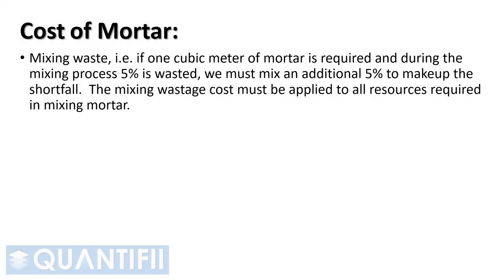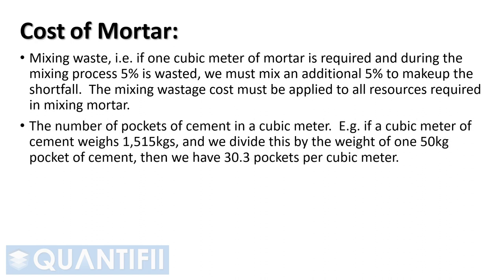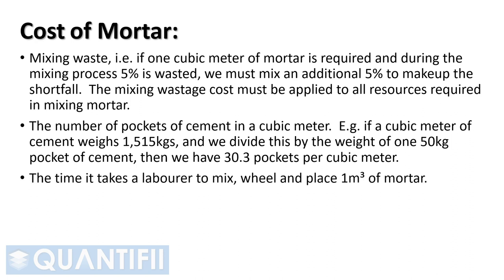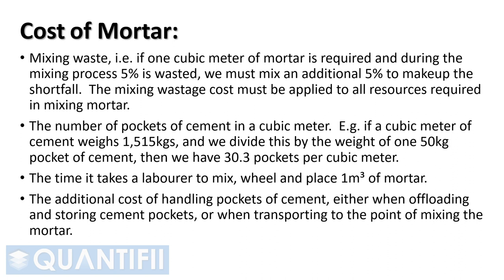Mixing waste — that is, if one cubic meter of mortar is required and during the mixing process 5% is wasted, we must mix an additional 5% to make up the shortfall. The mixing wastage cost must be applied to all resources required in mixing mortar. The number of pockets of cement in a cubic meter — for example, if a cubic meter of cement weighs 1,515 kilograms, and we divide this by the weight of one 50 kilogram pocket of cement, then we have 30.3 pockets per cubic meter. The time it takes a laborer to mix, wheel, and place one cubic meter of mortar, and the additional cost of handling pockets of cement, either when offloading and storing or when transporting to the point of mixing.